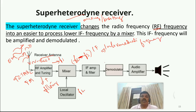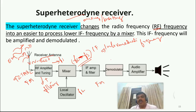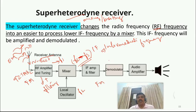The intermediate frequency is amplified by an amplifier and filtered, selecting only FL minus FC. It is then connected to a demodulator. The demodulator performs the inverse of modulation — it extracts the information from the FM modulated signal, where the carrier frequency varies with the instantaneous amplitude of the message signal.